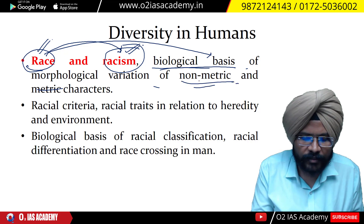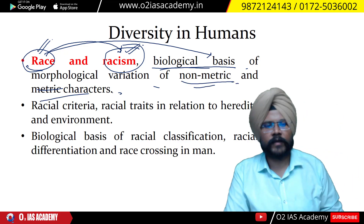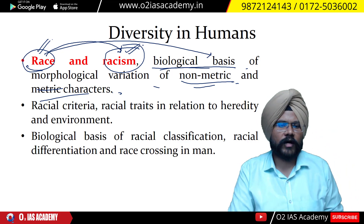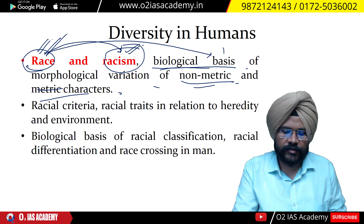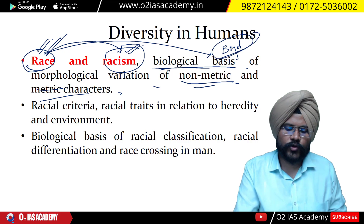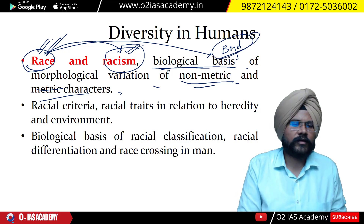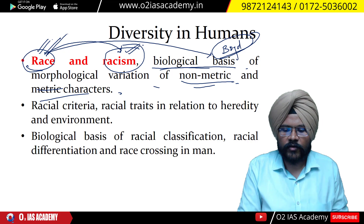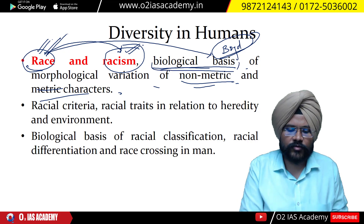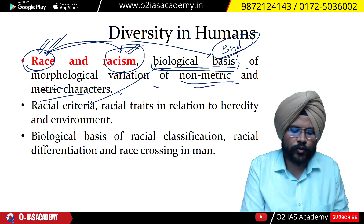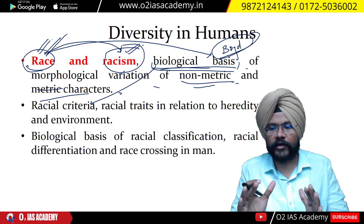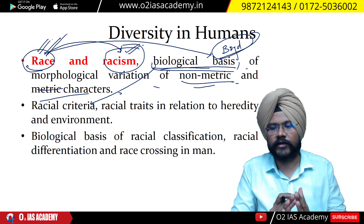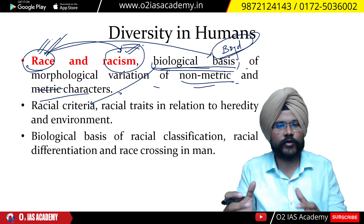Then we study the biological basis of morphological variations — the non-metric and metric characteristics. On what basis do you categorize race? There was a scientist and anthropologist named Boyd who talks about certain biological bases and racial criteria. On the basis of these biological criteria, different people have made various racial traits.